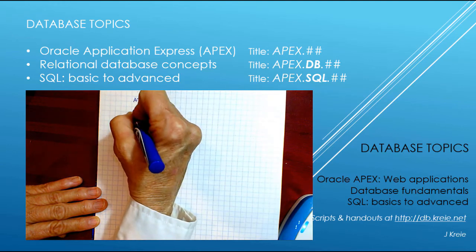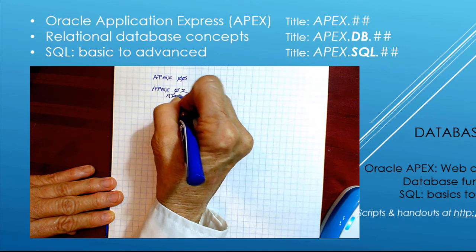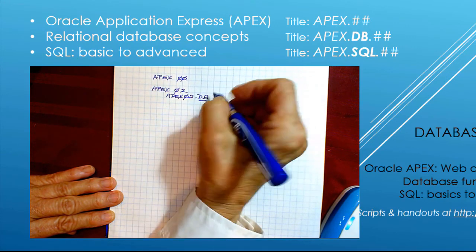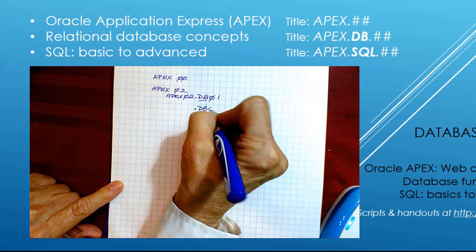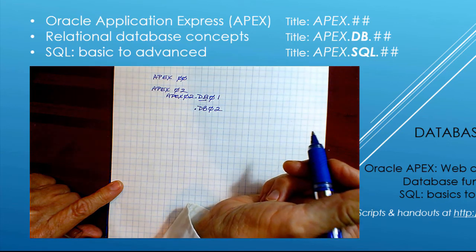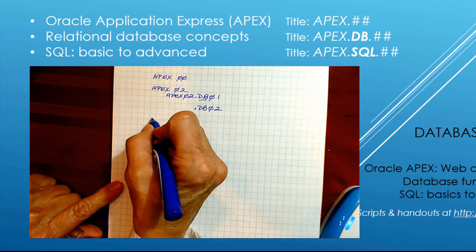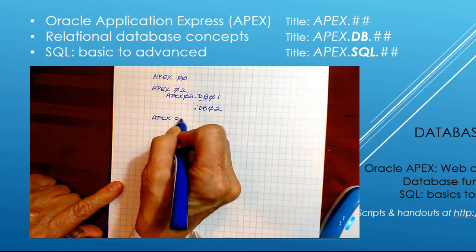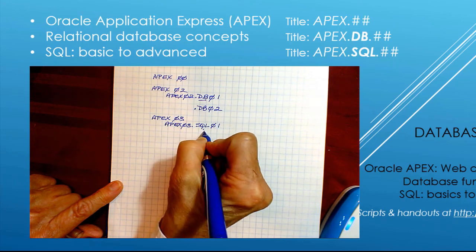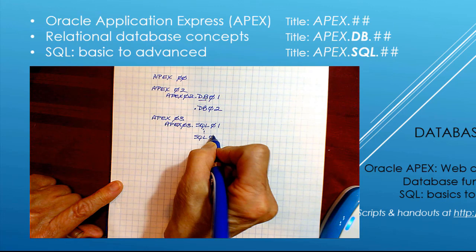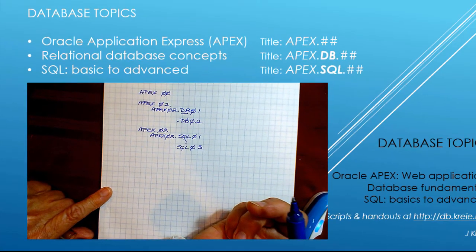If there's a related database video for a specific APEX video — say APEX 02 — then that database video name will be APEX02DB followed by the number in that video series. For one APEX video I might end up having two or even three database concept videos. Some APEX videos will have none of these. This is how you access the database videos specific to that APEX video. Similarly, if I have something specific to cover in SQL for APEX 03, those would be named SQL01 through SQL03, all relating to the APEX video 03. Hopefully that'll help.